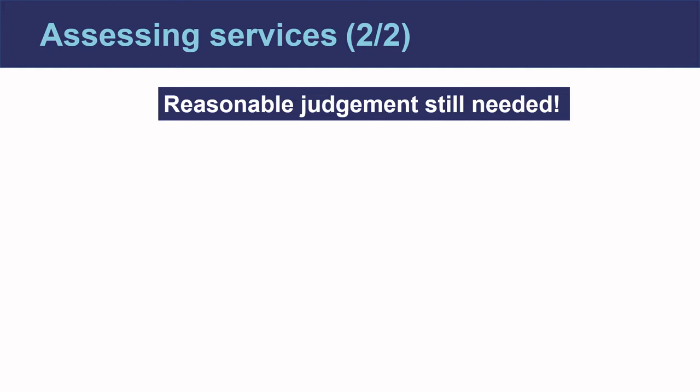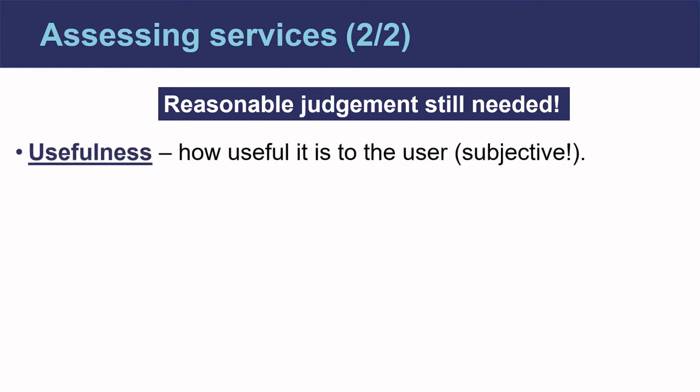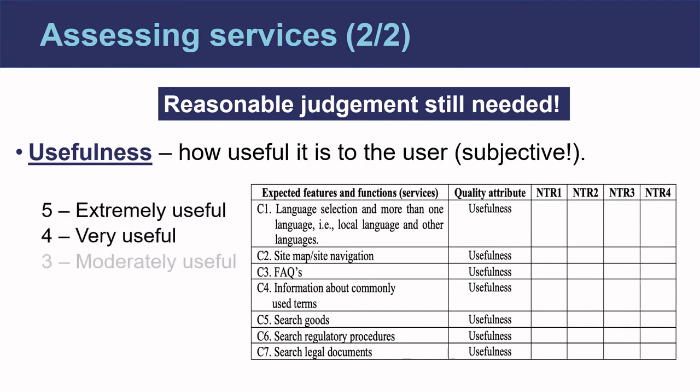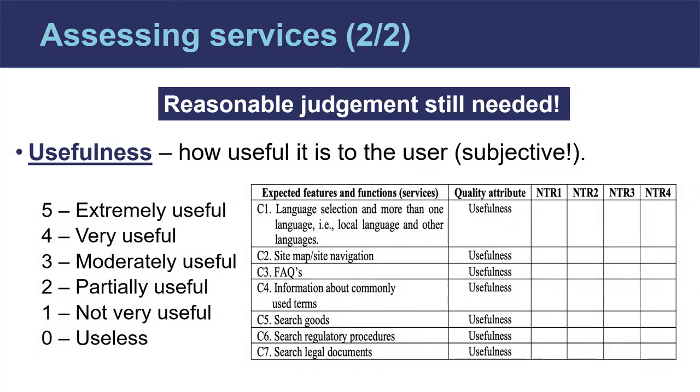Even with more concrete criteria, these scores we are assigning are very much proxies, designed to highlight areas for improvement. Therefore, in addition to having more concrete criteria, it is also worth evaluating each service the TIP provides based on the evaluator's reasonable judgment, exactly as we discussed in the previous module. Here, the criteria is usefulness, or simply how useful the service actually is. We go through exactly the same process: specify a clear scenario from the user's perspective, score each service between 0 and 5, where 5 is best and 0 is non-existent, compare with some benchmark TIPs, and finally compare and average the scores given by different evaluators.